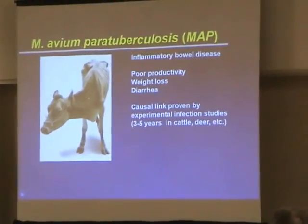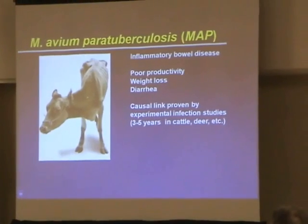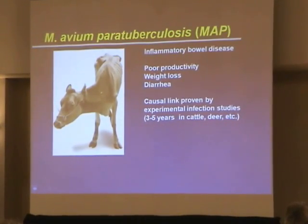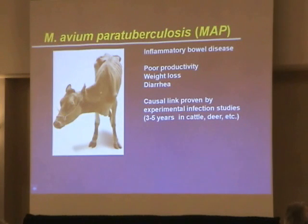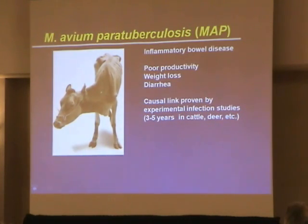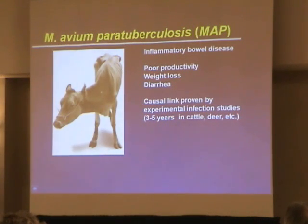Mycobacterium avium paratuberculosis, or MAP, represents an attractive candidate because it already is known to cause inflammatory bowel disease in cattle — Johne's disease. Any farmer knows that a cow's value lies in producing milk, so disease manifests not as complaints of pain and diarrhea, but as low milk production, and eventually weight loss and diarrhea. This is not just an association — it's causality. If you put the bacteria into a cow, three to five years later you get the disease. Take the bacteria from that cow, put it into another animal, and you get disease again. This is established causality.